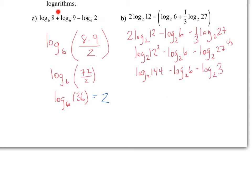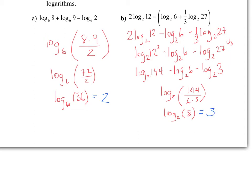Now combine: the only positive term, 144, goes in the numerator; the negative terms 6 and 3 multiply in the denominator. This gives log base 2 of 144 divided by 18. Since 144 divided by 18 is 8, we have log base 2 of 8. Since 2 to the power of 3 equals 8, the answer is 3.